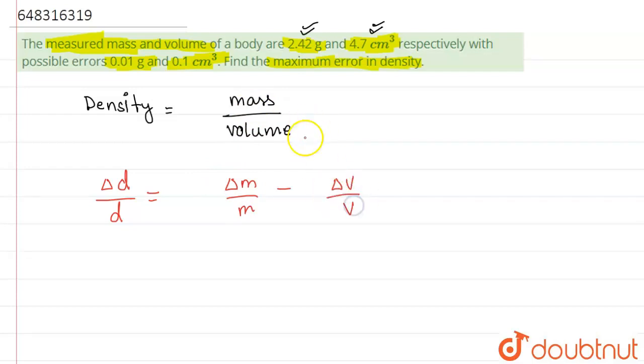Why it is minus? Because over here volume is coming in denominator. So what we have to do, error in mass is what? This is delta m.